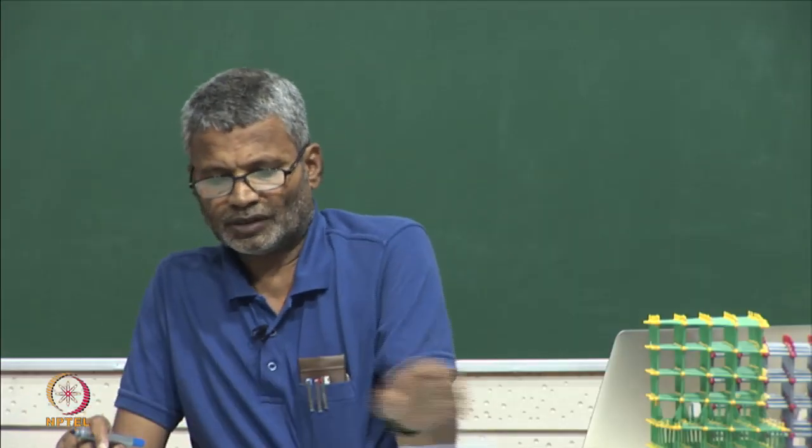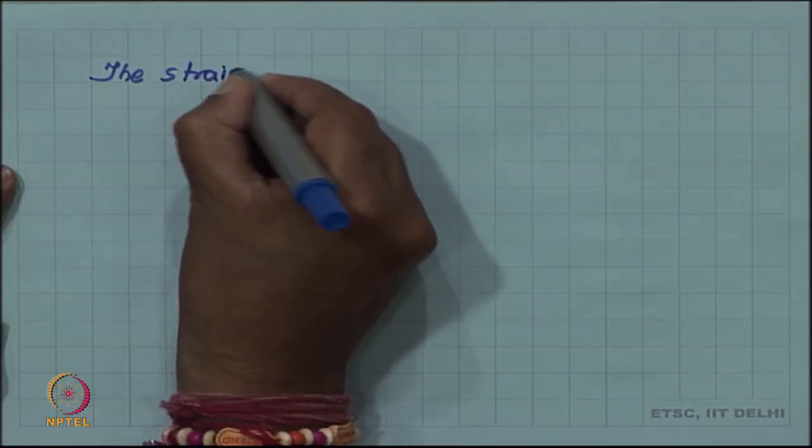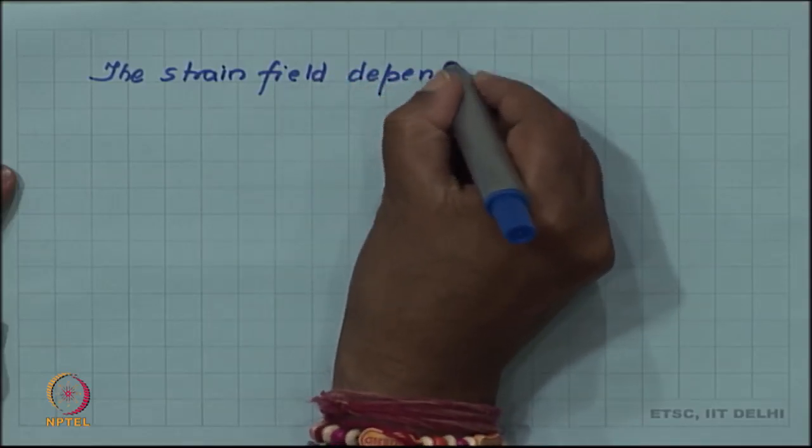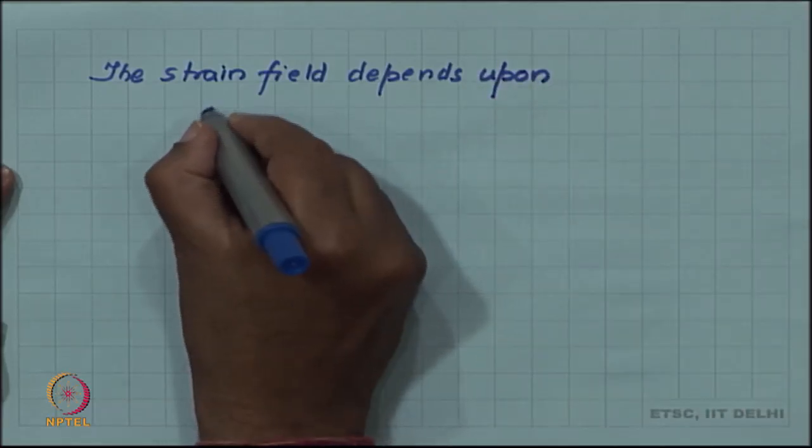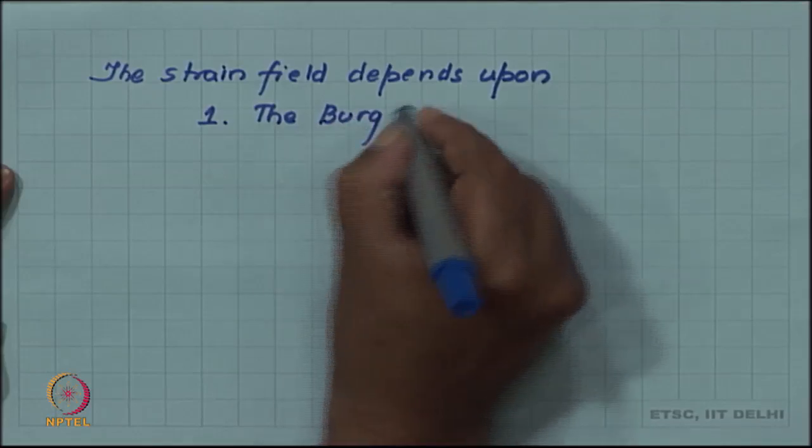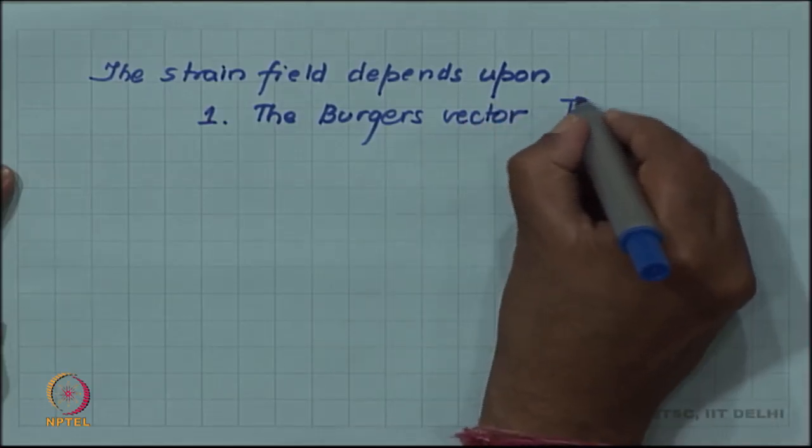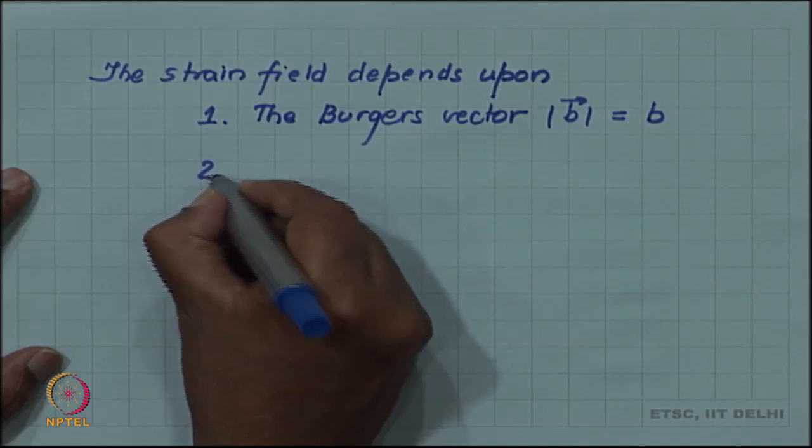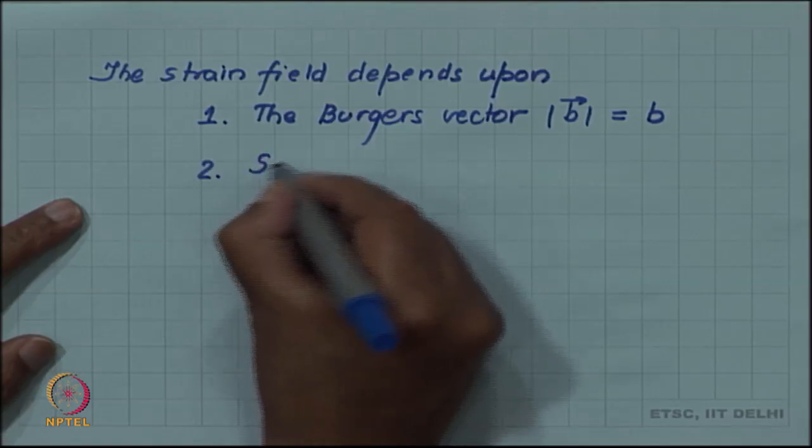This strain field depends upon the Burgers vector, the strain magnitude of the Burgers vector, and it will also depend upon the elastic modulus of the material, in particular the shear modulus.